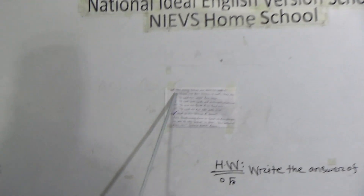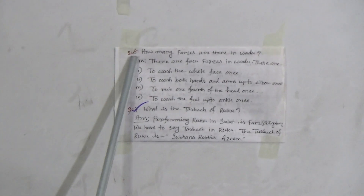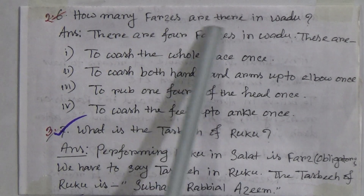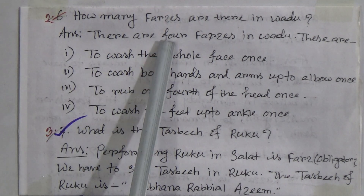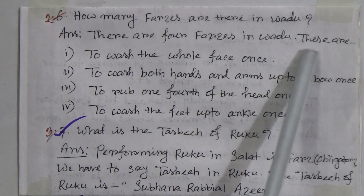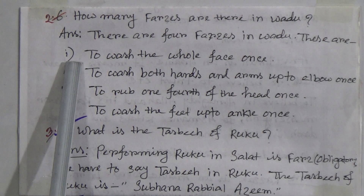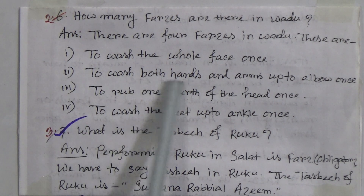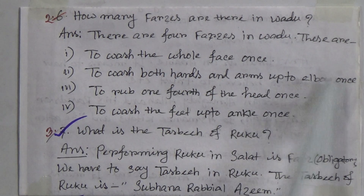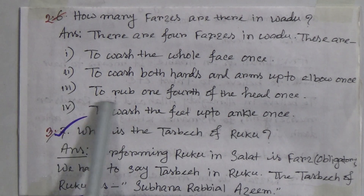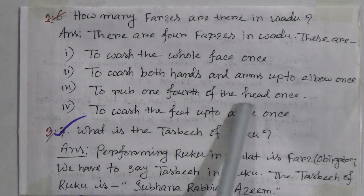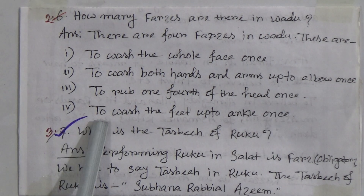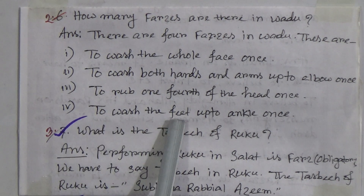Let's come to the board. Chapter Two, short question number two: How many faraid are there in wudu? Answer: There are four faraid in wudu. These are: number one, to wash the whole face once; number two, to wash both hands and arms up to the elbow once; number three, to wipe one-fourth of the head once; number four, to wash the feet up to the ankle once.